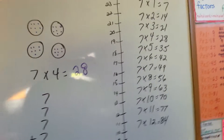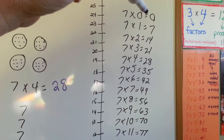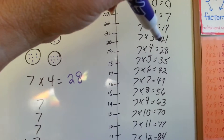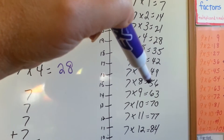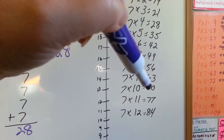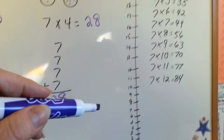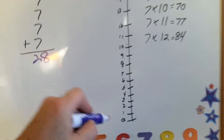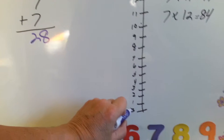So here's the 7 times table. It goes 0, 7, 14, 21, 28, 35, 42, 49, 56, 63, 70, 77, and 84. When you skip count by 7s, this is what happens.